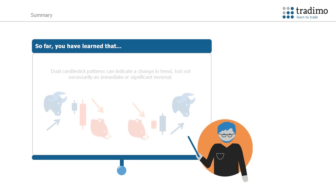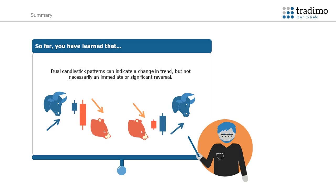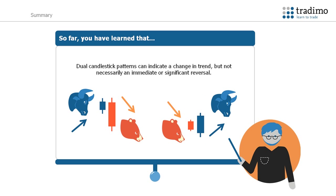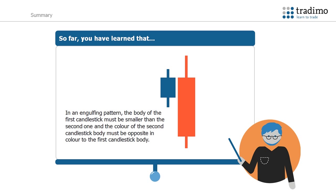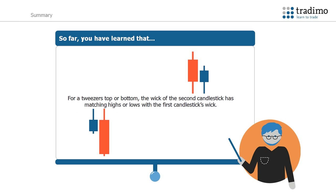So far you have learned that dual candlestick patterns can indicate a change in trend but not necessarily an immediate or significant reversal. In an engulfing pattern, the body of the first candlestick must be smaller than the second one, and the colour of the second candlestick body must be opposite in colour to the first candlestick body. And finally, for a tweezer top or bottom, the wick of the second candlestick has matching highs or lows with the first candlestick's wick.